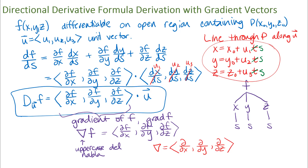So we could also write this directional derivative formula as the gradient of f dot u. I often write it that way as a shortcut. But you have to remember what the symbols mean — that the gradient of f is this vector of partial derivatives. We're going to talk more about the gradient vector in a few videos, but for right now I'm going to do an example of a directional derivative using that gradient vector.